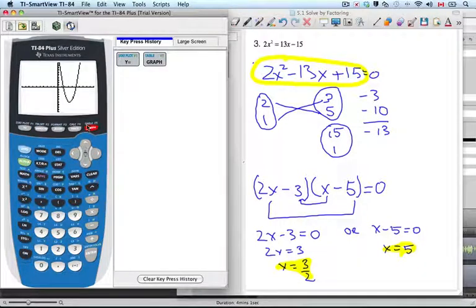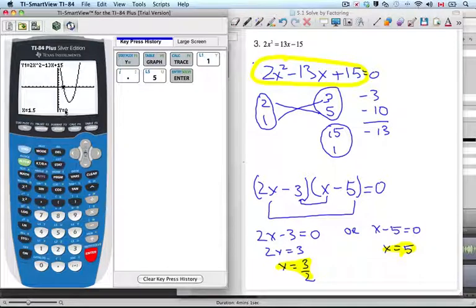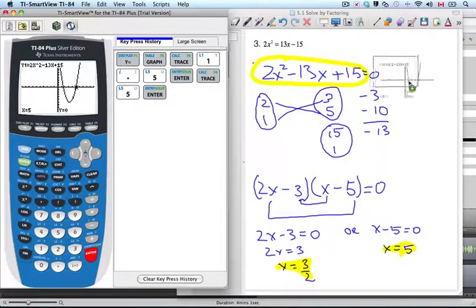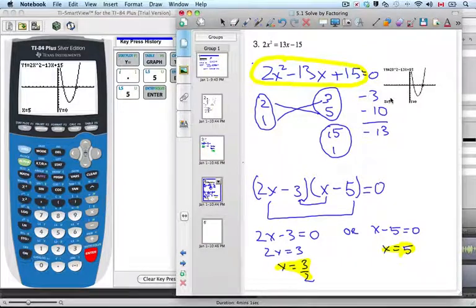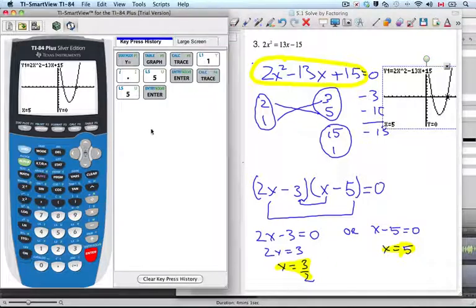One of the things I can do is check my answers. If I go trace, I'm going to trace 1.5. And if I've done it correctly, I should get my y value to be 0, which is correct. I can also try trace, hit 5, enter. And again, that's what I was hoping for. My answer is correct. I can see very clearly that was the value I was looking for. My y value is 0, my x value is 5. That's one way.